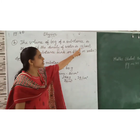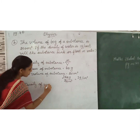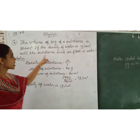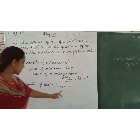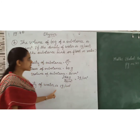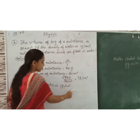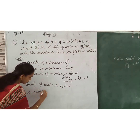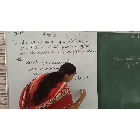The density of water is 1 gram per centimeter cube, and the density of the substance is 3 gram per centimeter cube. Since the substance is more dense than water, the substance will sink in the water.